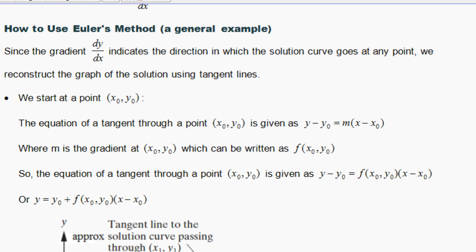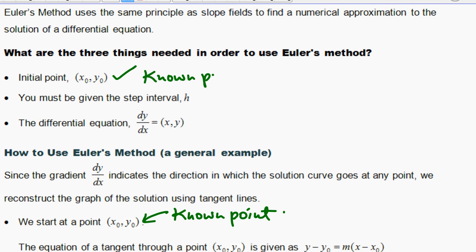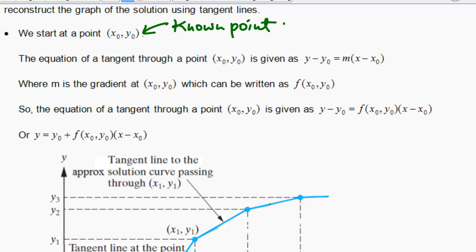We start at a point — an initial point. Remember, x₀, y₀ is an initial point, because you have to be given one. The equation of a tangent line through this point will be given by that equation. This will be the equation of the tangent through this initial point, where m is the gradient. You can find m by plugging the initial point into the differential equation.